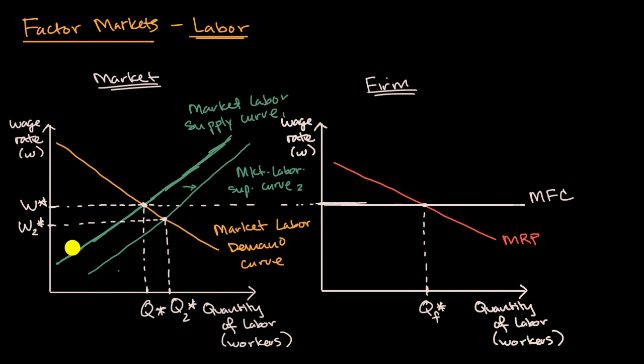Now what happens for this firm? Well, our equilibrium wage in the market has gone down. And we assume that this firm, it is a perfectly competitive labor market. So this firm is just going to pay whatever the market wage is.